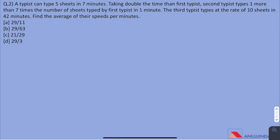Question 2. A typist can type 5 sheets in 7 minutes, taking double the time than the first typist. The second typist types one more than 7 times the number of sheets typed by the first typist in 1 minute. The third typist types at the rate of 10 sheets in 42 minutes. Find the average of their speeds per minute. First of all, in such questions, read the question carefully and then find the speed per minute or per hour as per the demand of question for all the given components.